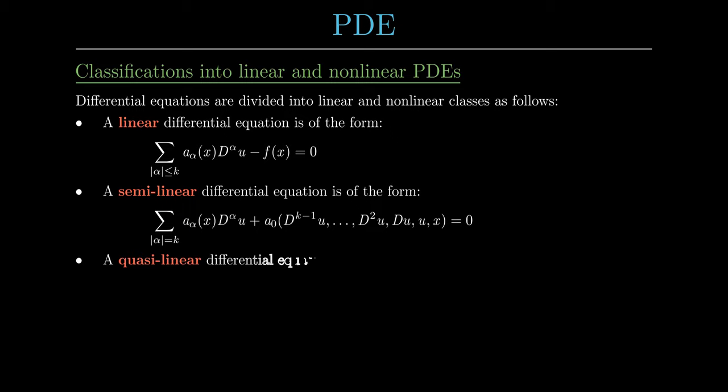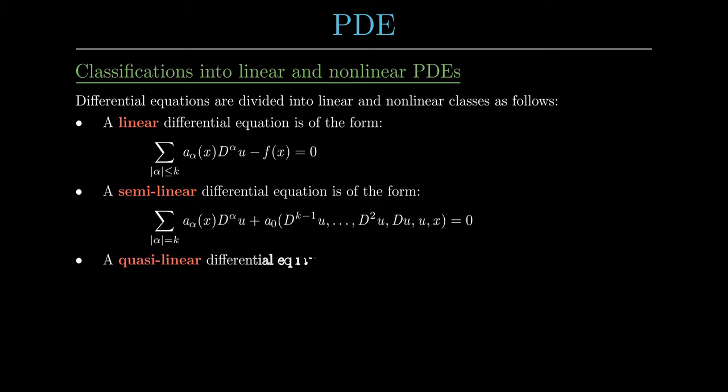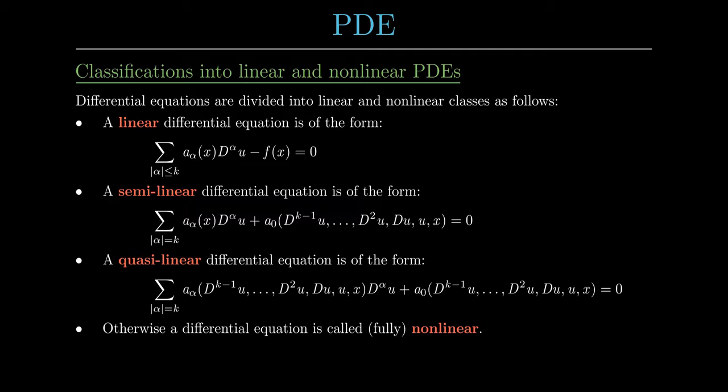In a quasi-linear PDE, the coefficients of the highest-order derivatives can depend on lower-order derivatives as well. That is, we can have nonlinear terms of lower order in front of the derivatives of highest order. We call a differential equation fully nonlinear if none of the previous cases applies.